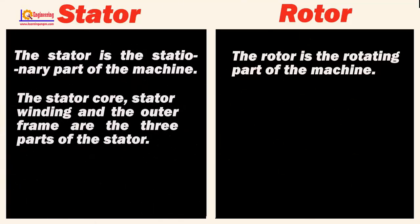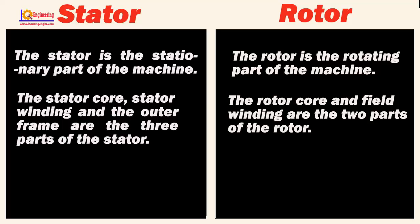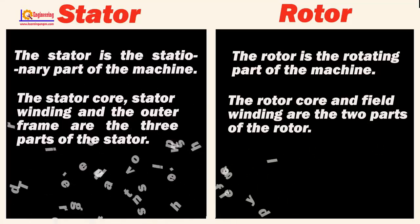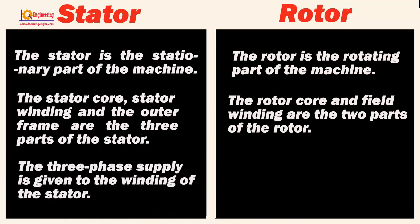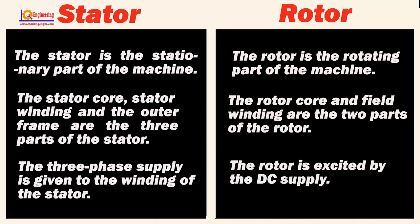The stator core, stator winding, and the outer frame are the three parts of the stator, whereas the rotor core and field winding are the two parts of the rotor. The three-phase supply is given to the winding of the stator whereas the rotor is excited by the DC supply.